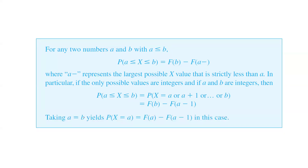If a equals b, then we calculate the probability that X is exactly a, which is F(a) minus F(a minus 1).